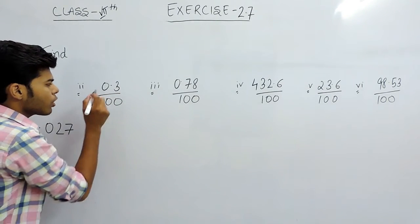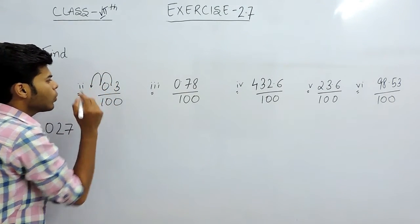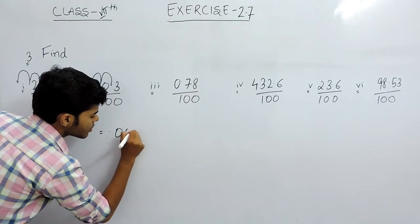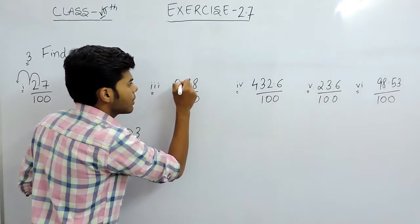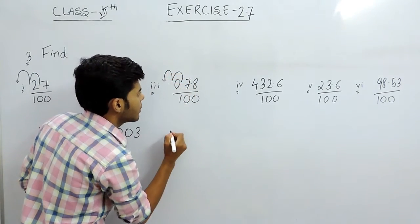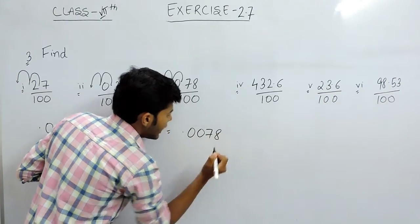Now in this one also, the point will be shifted one point and then by two points, and the answer will be 0.003. Then again in this one, by two points, and the answer will be 0.0078.